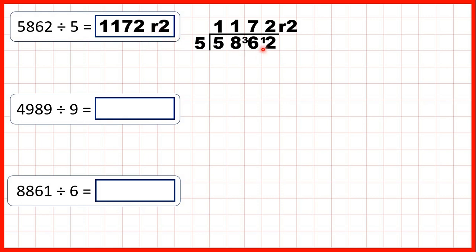We could have spotted straight away that for this question we were going to get a remainder, because remember all multiples of 5 end in a 5 or a 0, and here we were dividing a number that ends in a 2.